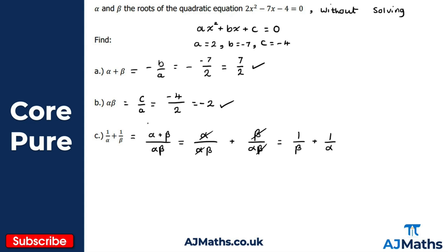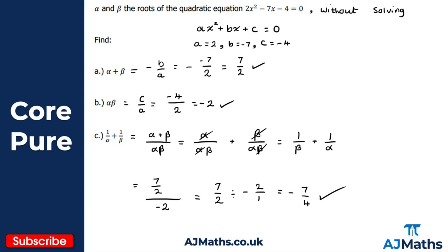So we use alpha plus beta over alpha beta. Alpha plus beta is seven over two, and alpha beta is minus two, so we have seven over two divided by minus two — equivalently seven over two divided by minus two over one — giving us minus seven over four. That's our solution for part c, and that brings us to the end of this video on roots of a quadratic. In the next video we're going to take a look at roots of cubics.